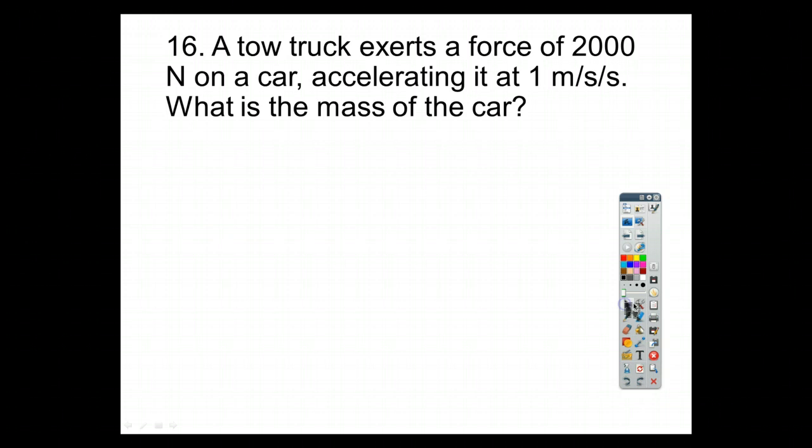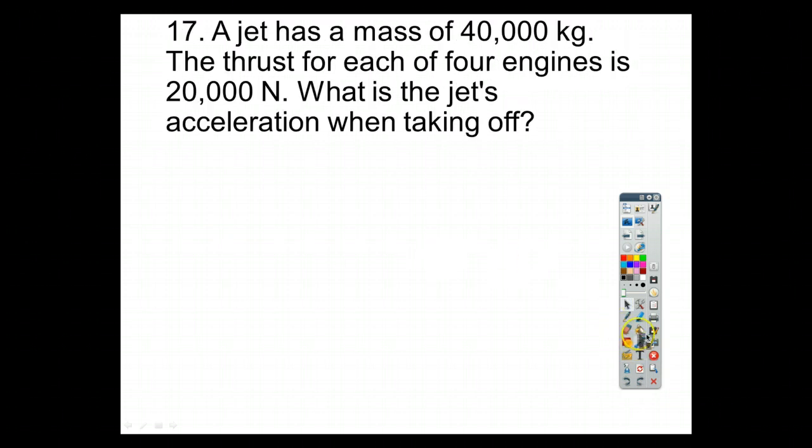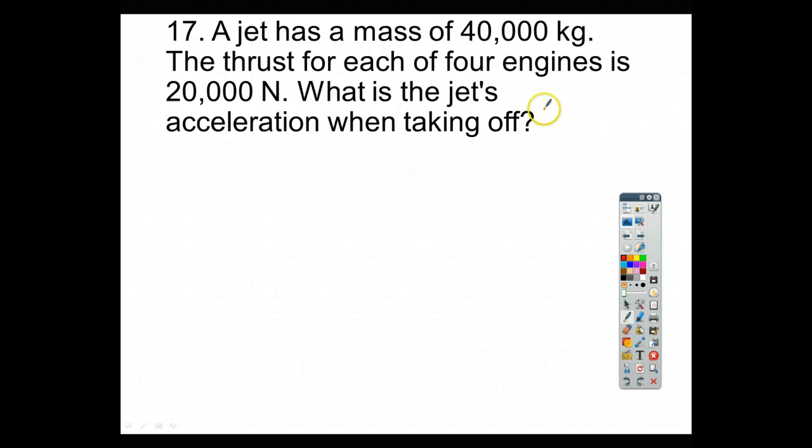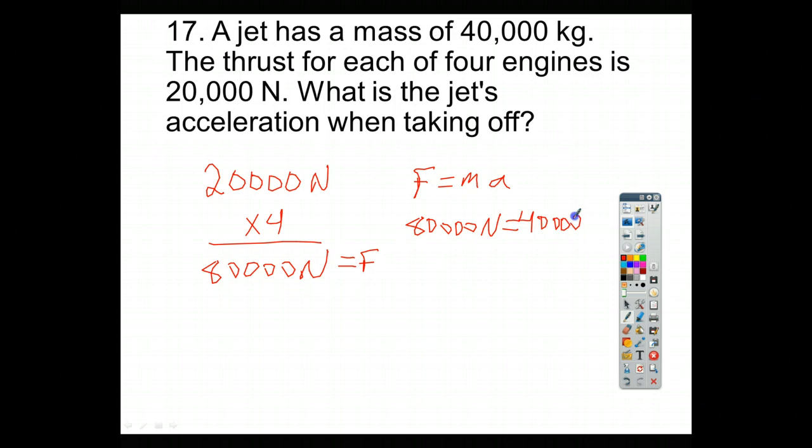For number 17, it says a jet has a mass of 40,000 kg. The thrust for each of the four engines is 20,000 newtons. What is the jet's acceleration when taking off? Here we have to be careful because we have four engines that are producing 20,000 newtons of force, so we need to multiply those two together, and I get 80,000 newtons. That's my force, so that's equal to f. We know that f is equal to m times a. We have 80,000 newtons of force. That's equal to 40,000 kg, and we have to multiply that times a. If we divide both sides by 40,000, we'll end up with an acceleration equal to 2 m per second squared.